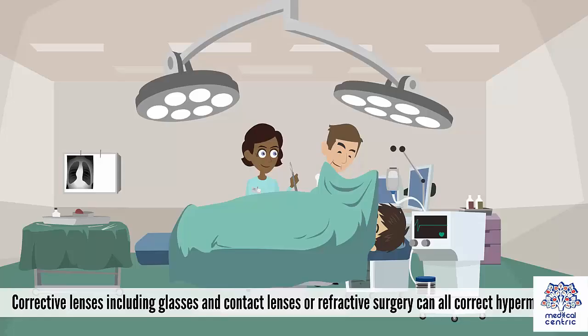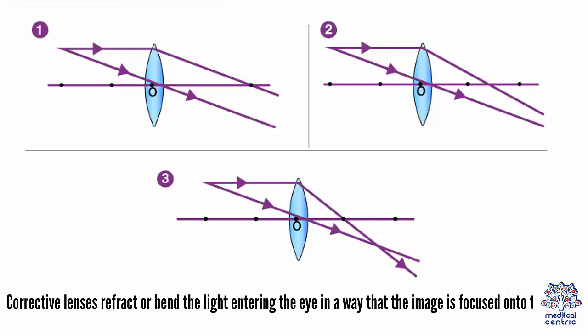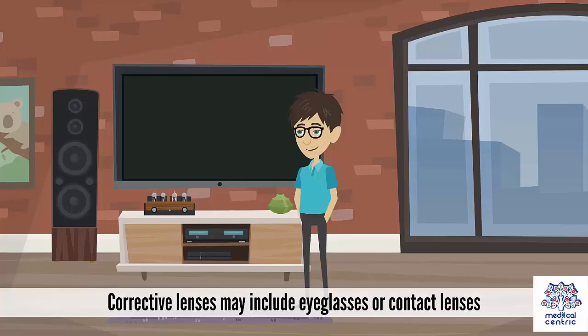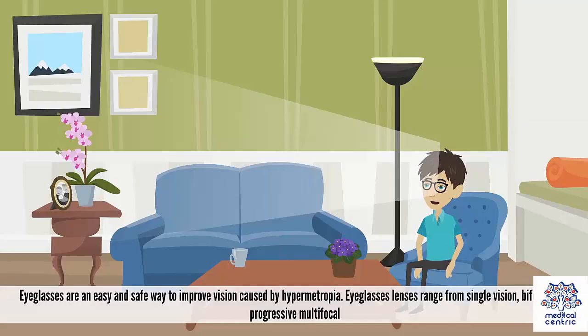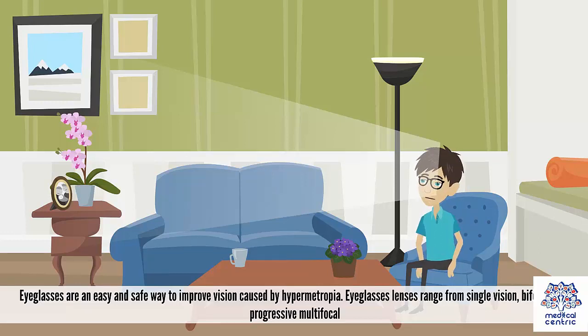Corrective lenses — including glasses and contact lenses — or refractive surgery can all correct hypermetropia. Corrective lenses refract or bend the light entering the eye so that the image is focused onto the retina. Eyeglasses are an easy and safe way to improve vision caused by hypermetropia, with lens options ranging from single vision, bifocals, and progressive multifocal.